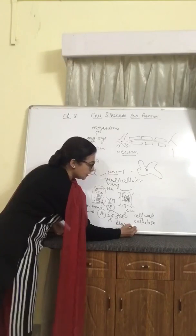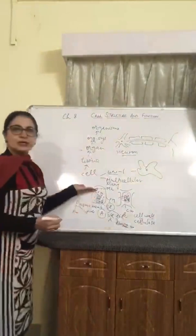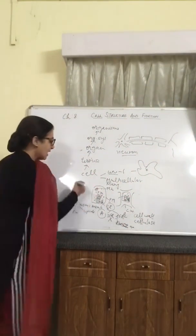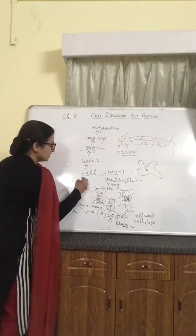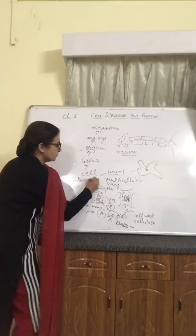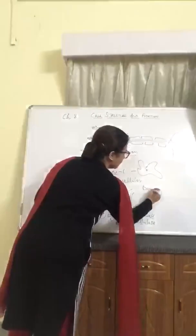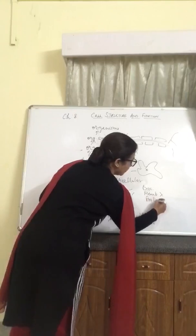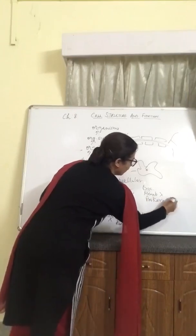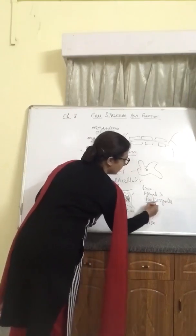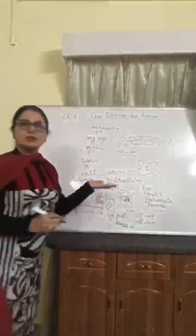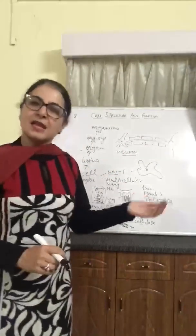These organelles have a membrane, and that is why cells with membrane-bound organelles are known as eukaryotes. In certain bacteria, these membranes are missing and they are known as prokaryotes — P for prokaryotes, P for primitive. I hope you have understood the structure and function of the cell. Thank you so much.